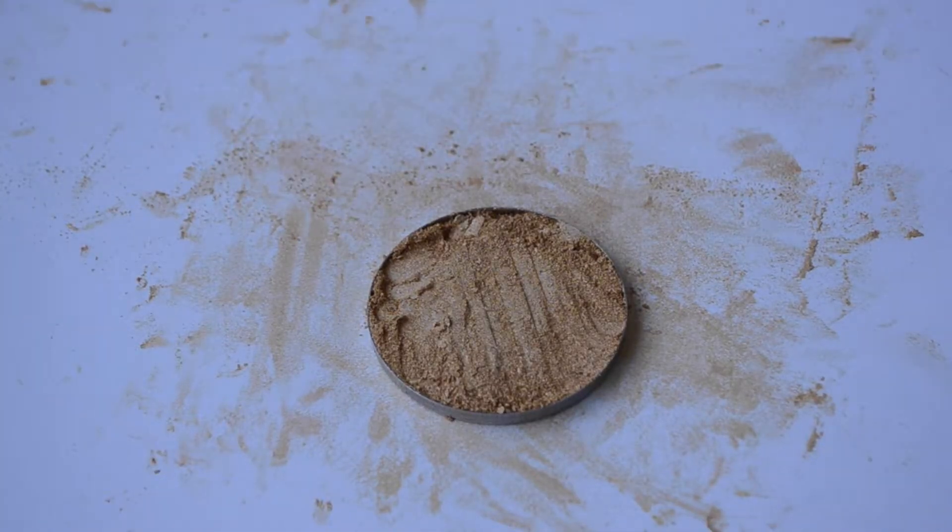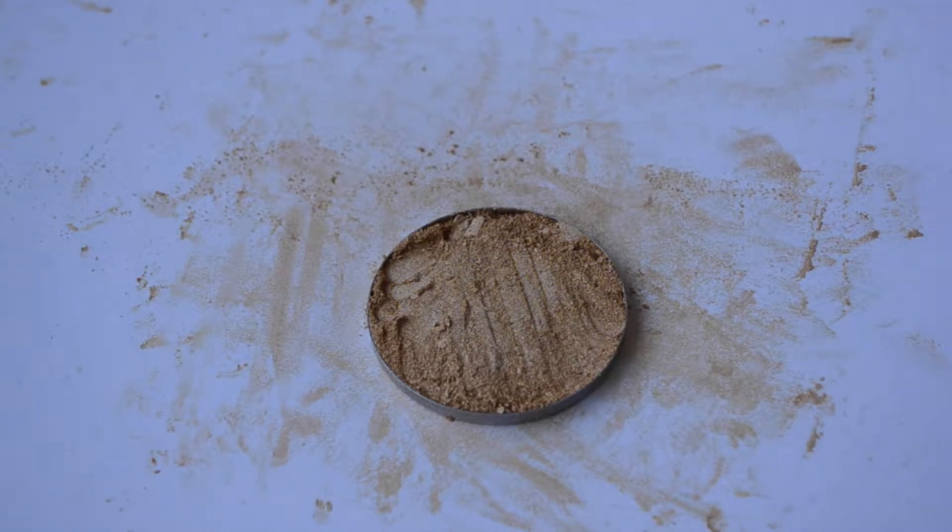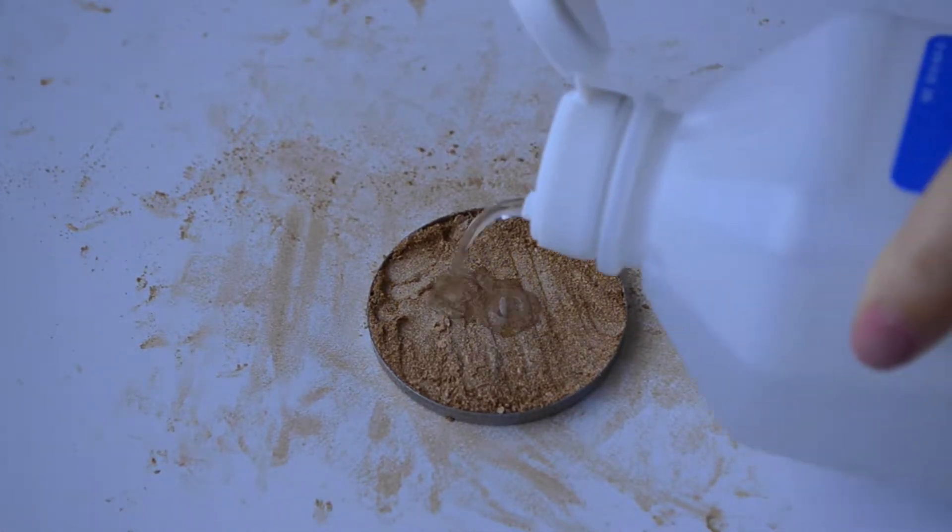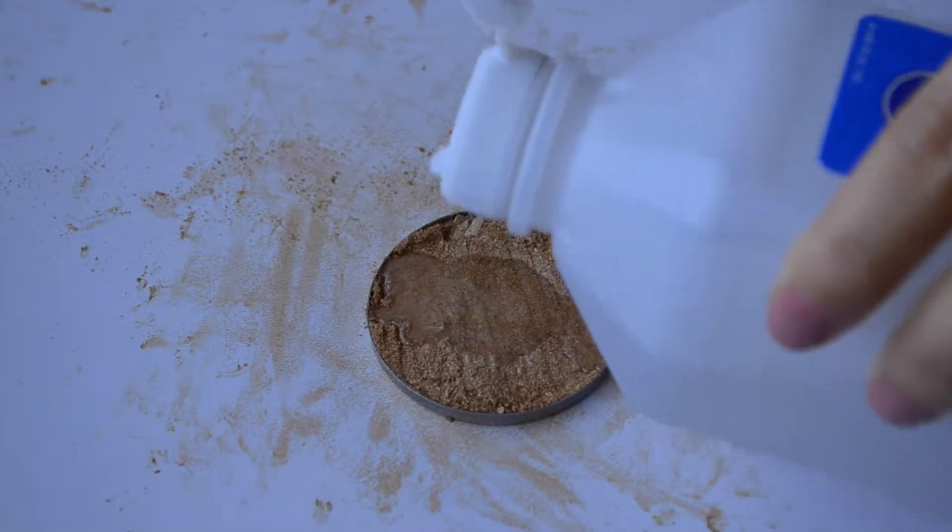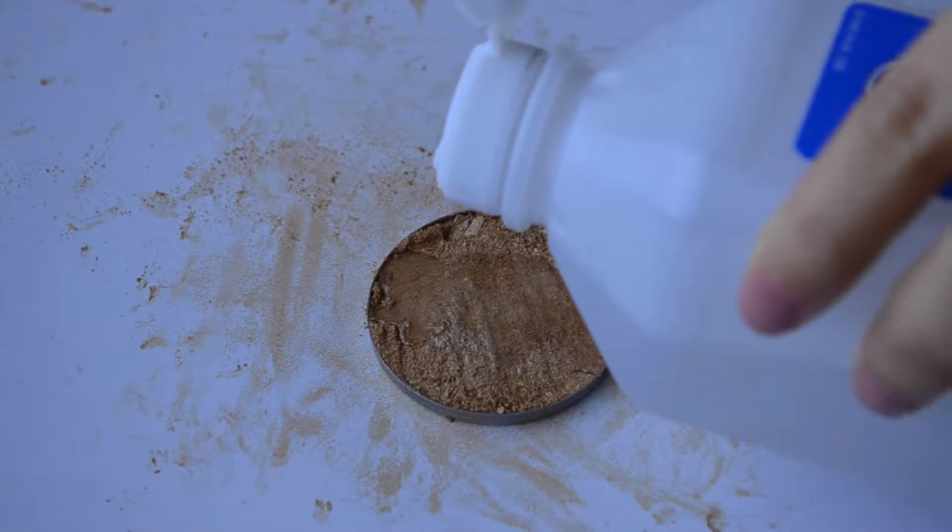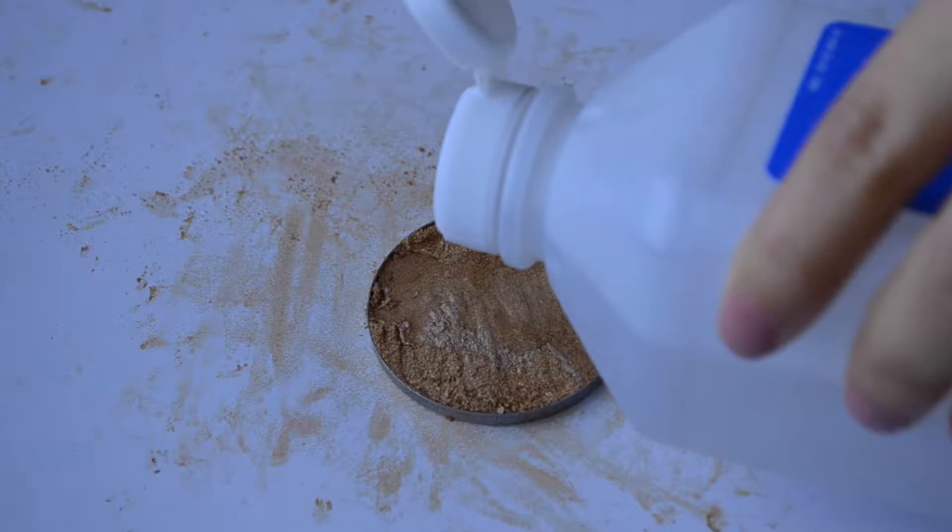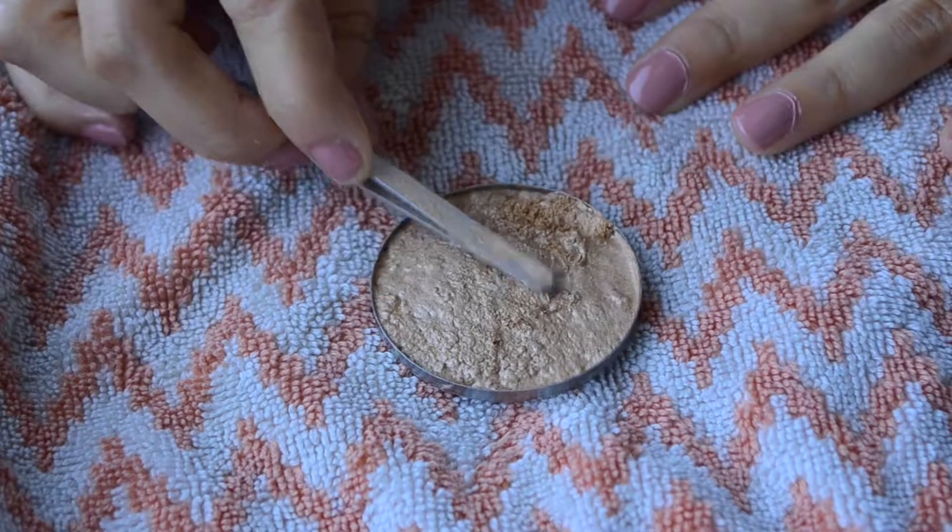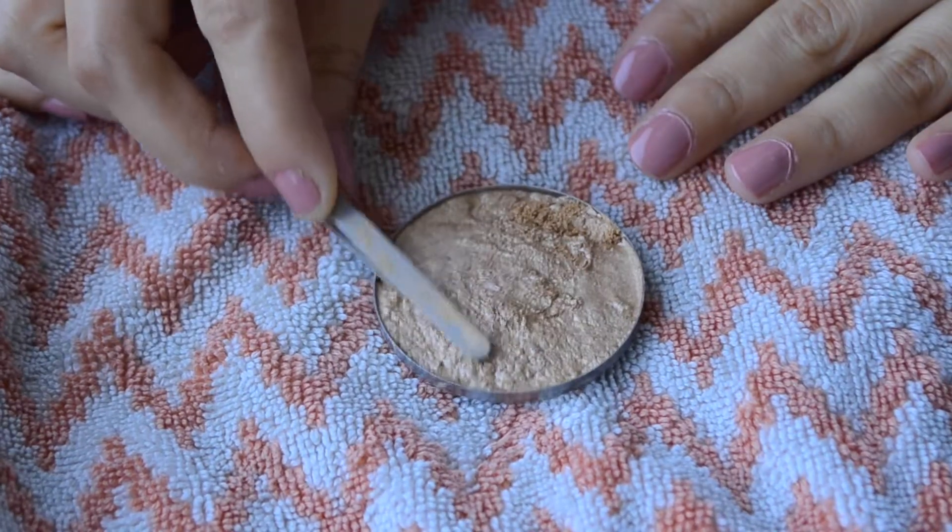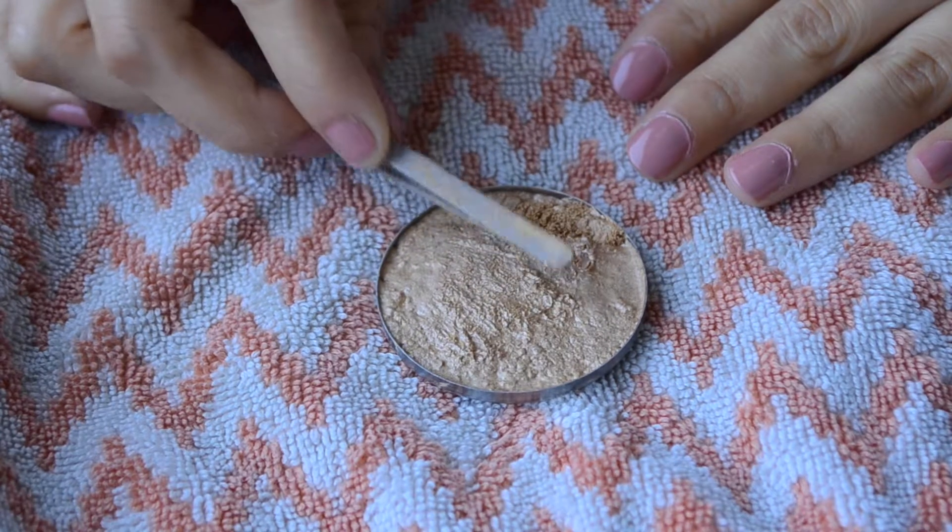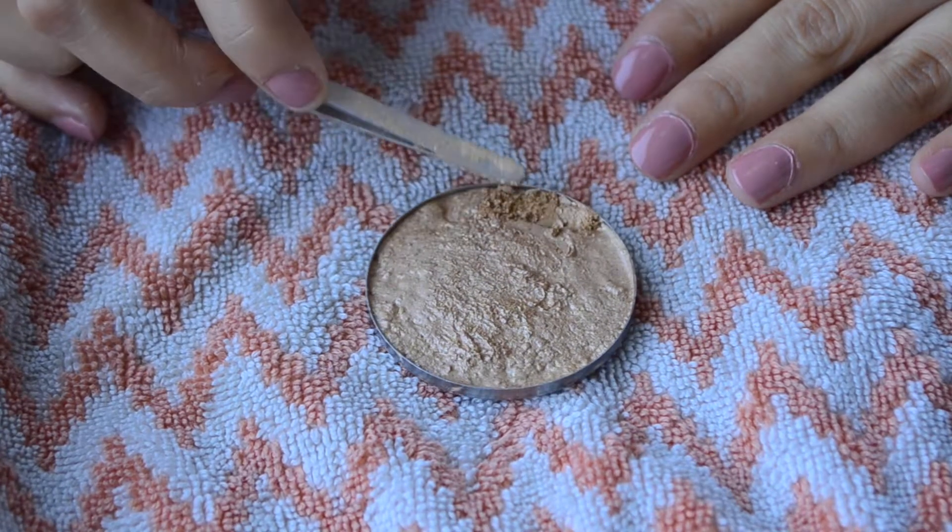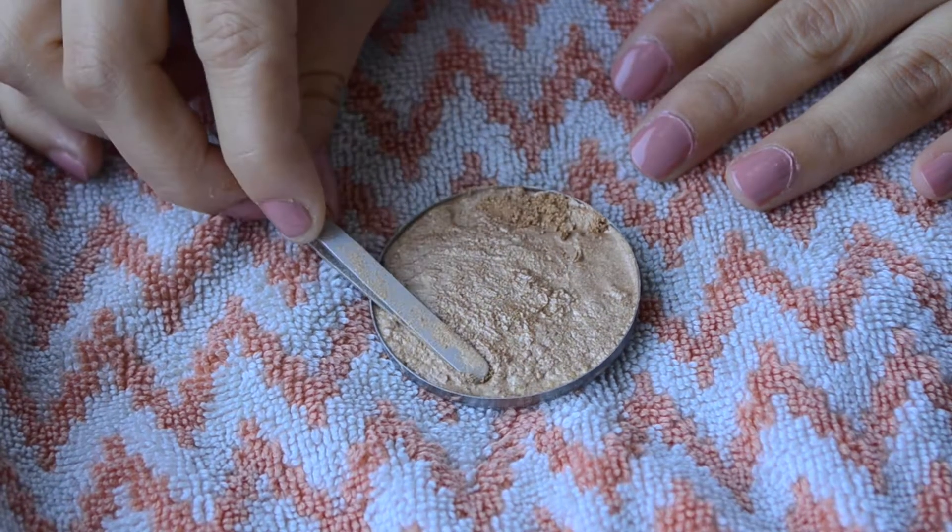Now that you have flattened out the highlight as much as you can, you want to grab your alcohol. I recommend using a high percentage of alcohol, that way the product absorbs it faster and it dries quicker. For this part, I did get a towel because I was dropping alcohol everywhere. Now with the end of my tweezer, I'm just going to smooth out the top of the highlight as much as I can in the pan.